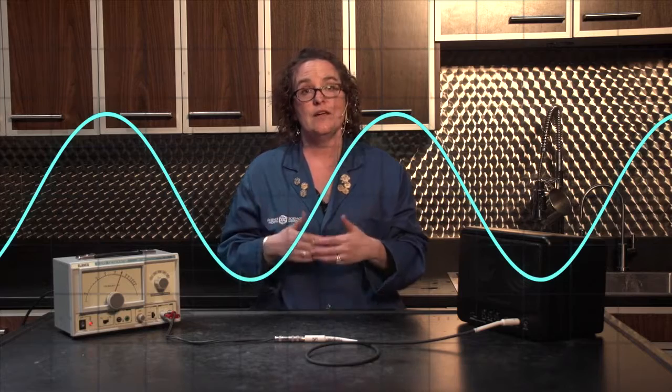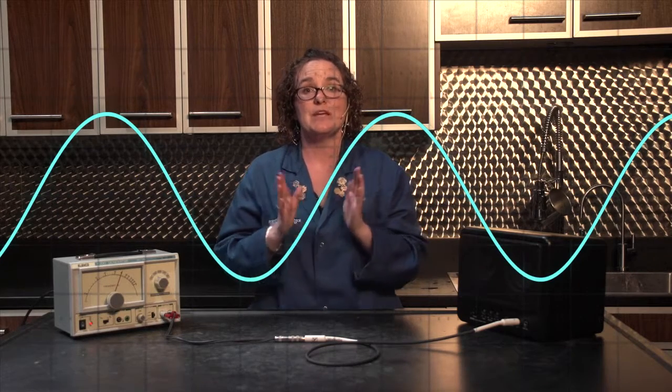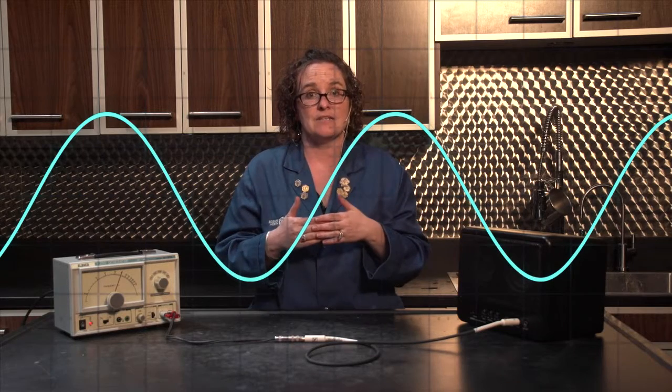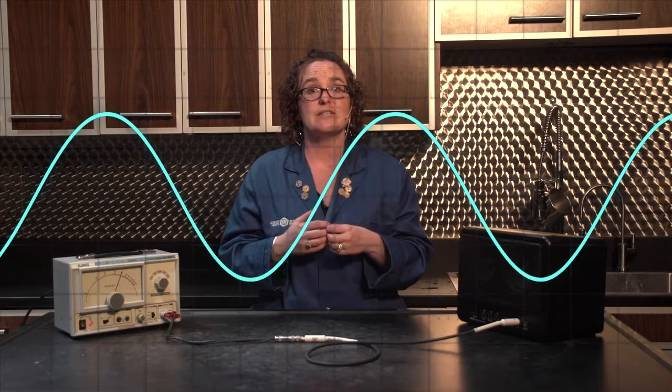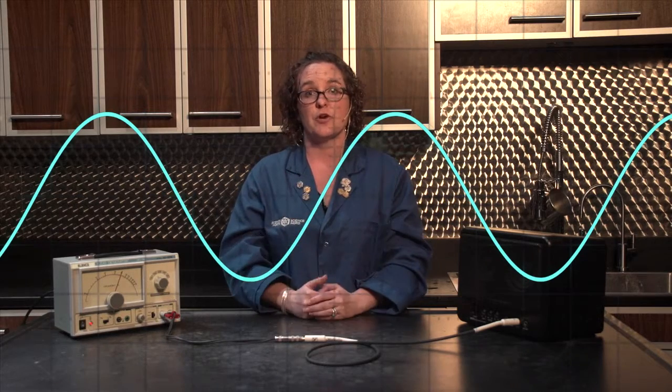When the frequency is higher, the oscilloscope shows this as the peaks being closer together, which in essence illustrates that the molecules are moving faster. When the molecules are vibrating slower with a lower frequency, the oscilloscope represents this visually as the peaks being farther apart.